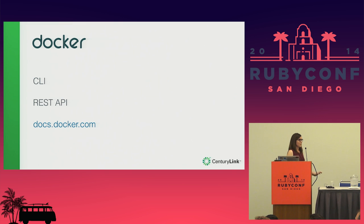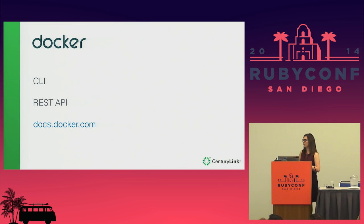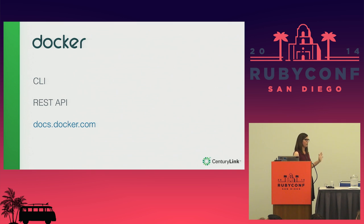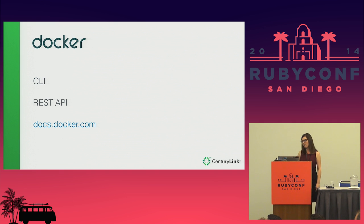When you do have Docker installed — maybe with Boot2Docker, maybe your own Vagrant file — you're going to interact with Docker probably via the CLI. There's also a REST API for interacting with Docker. Both of these have extensive, wonderfully written documentation at docs.docker.com.